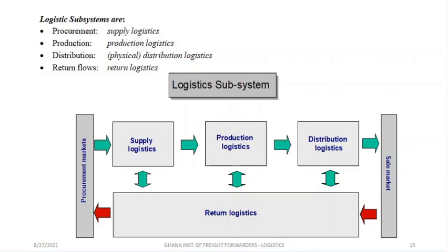Remember, distribution and transportation are not the same. Production logistics comes after the supply has come — they produce. If they are producing and there's a problem, the arrow with the double end means that it must come back to return logistics, or if there's some anomaly in the supply it also comes back to return logistics.